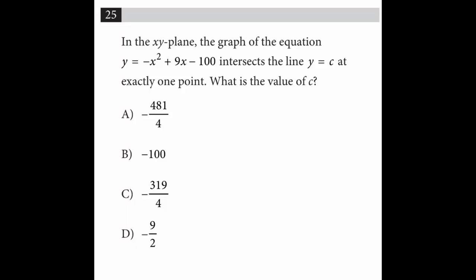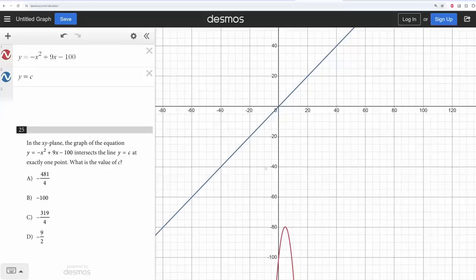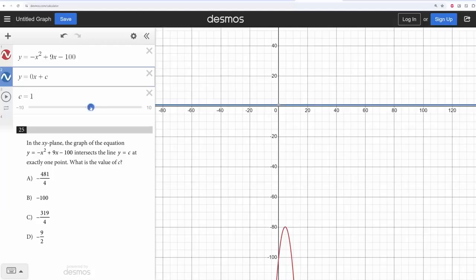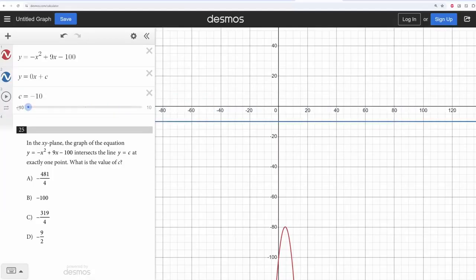Okay, buckle up. This next question is important. In the xy plane, the graph of the equation y equals negative x squared plus 9x minus 100 intersects the line y equals c at exactly one point. What is the value of c? So we graph our quadratic and our line into Desmos, and for some reason, it treats c as a variable rather than as a constant. So rewrite c as 0x plus c, and then you can add the slider. But wait, our c slider doesn't bring our line all the way down to the quadratic.